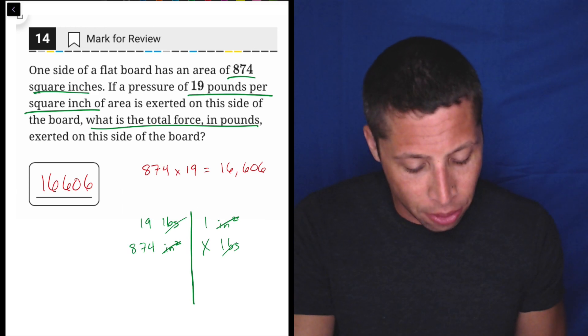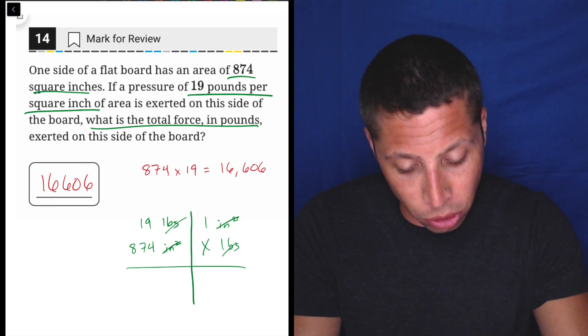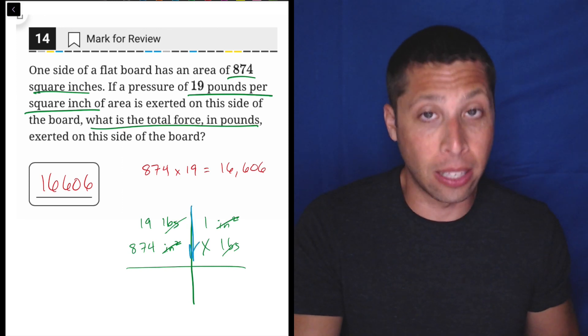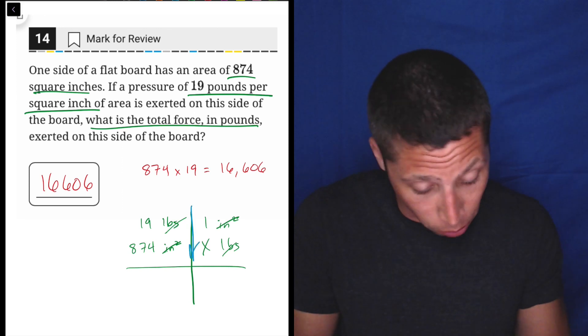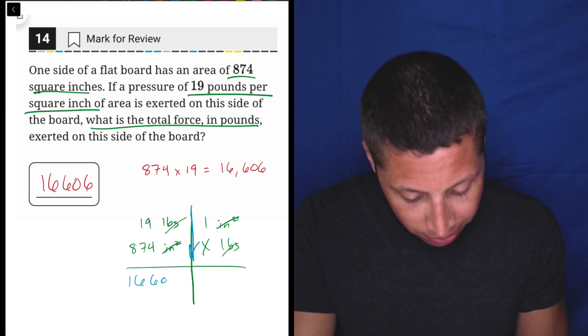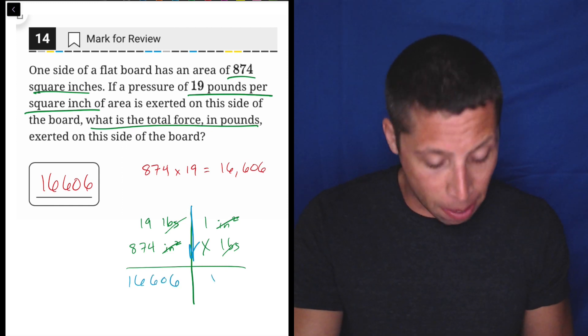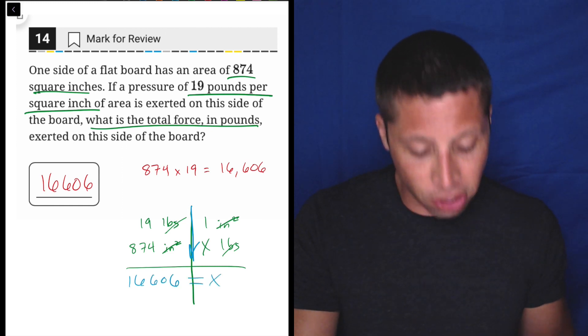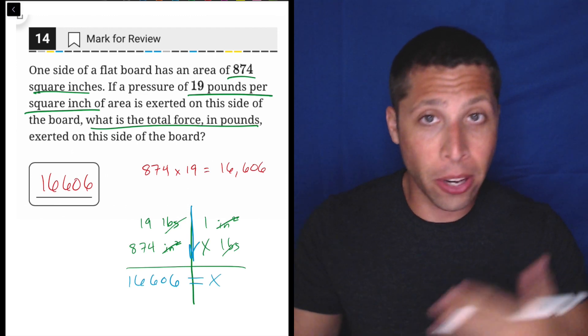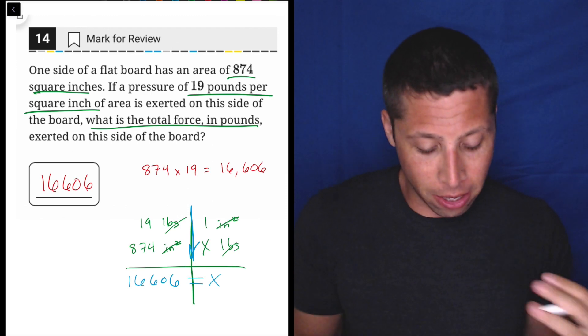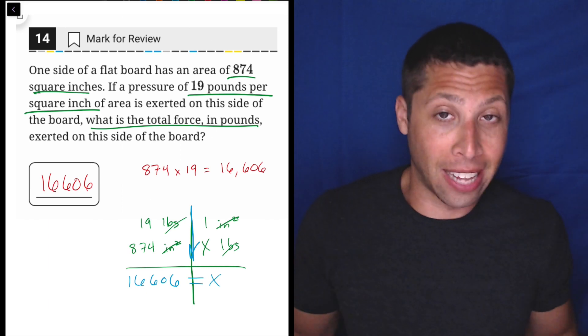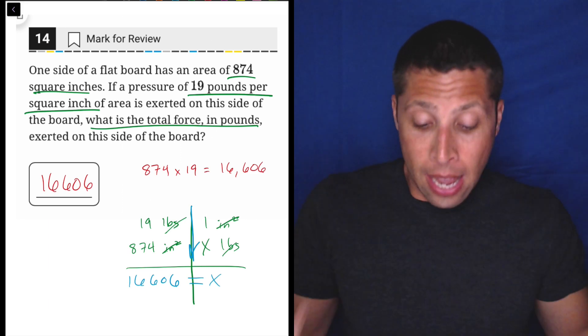I don't know. The final way to kind of deal with this is you just multiply down the columns. So 19 times 874, we just did that, 16606 and 1 times X is X. And then this is just an equation. Sometimes we have to solve that equation because there's multiple numbers, but here it's just X equals 16606. That's it. That's the end of the line.